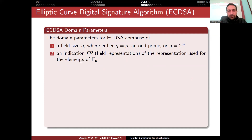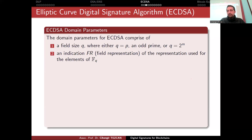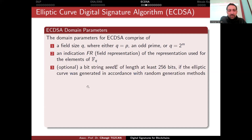Another domain parameter is the field representation FR, which specifies how you represent the elements of F_Q. In theory, the choice of representation shouldn't affect anything mathematically, but in practice your choice of representation may affect performance, which is why it is somewhat important here.